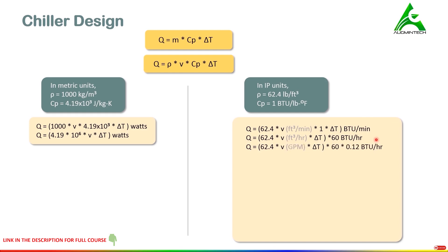If you have the value of V in GPM (gallons per minute), use this equation where we multiply by the term 0.12 to convert cubic feet per hour to GPM. Substituting V in GPM gives the rate of heat transfer in BTU per hour. This is the most widely used equation because all standard selection tables use flow in GPM. At this point, it is important to pause the screen and analyze these three equations for a few moments.